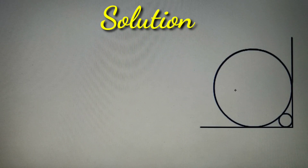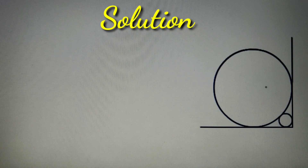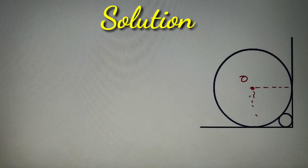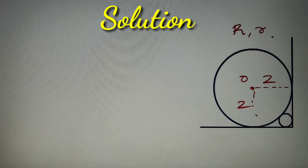According to our given question, we are given that a larger circle is placed against a right angle, and a smaller circle is placed between the larger circle and this right angle. We have to find the radius of this smaller circle. We are given that the larger circle's radius is 2. If we consider capital R as 2 and the radius of the smaller circle as small r, we can find a relation between R and r to determine the smaller radius.